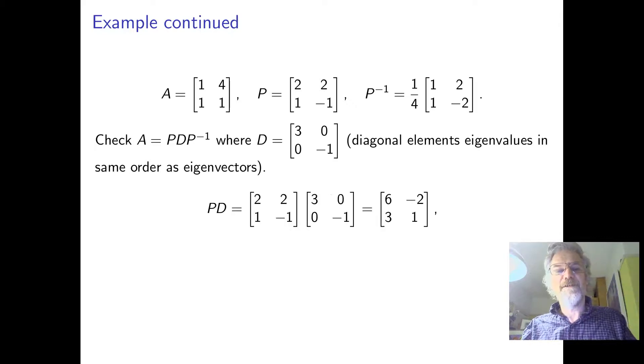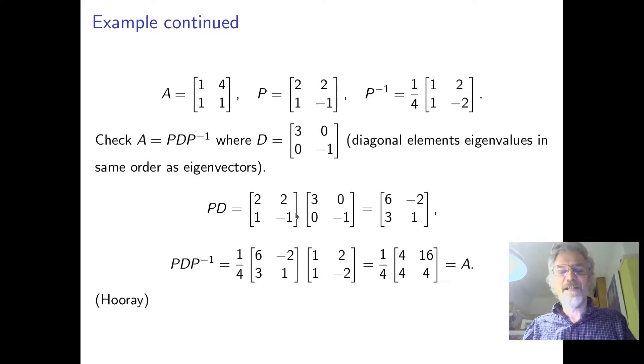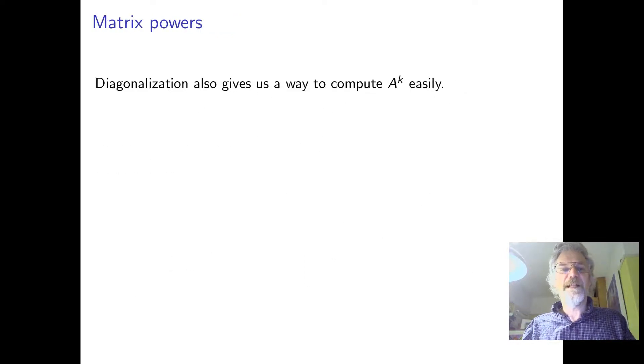So that's P and D and PDP^(-1) equals A and you can check that. It may be easier to do PD and AP, check that they're the same. So it works. So that's diagonalized.